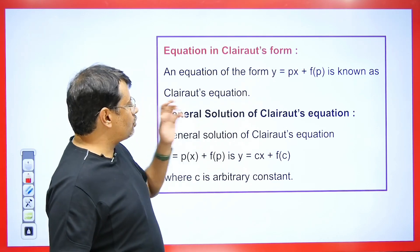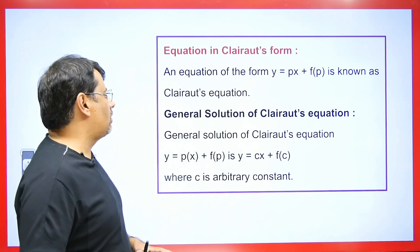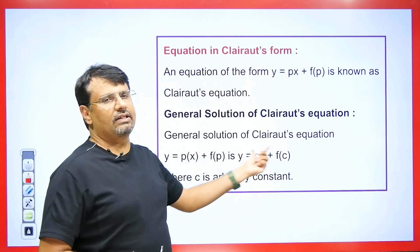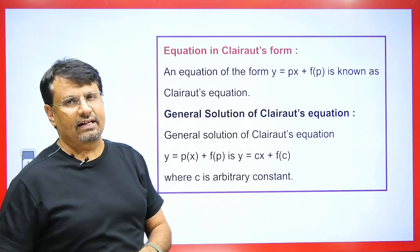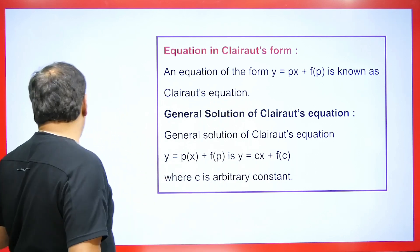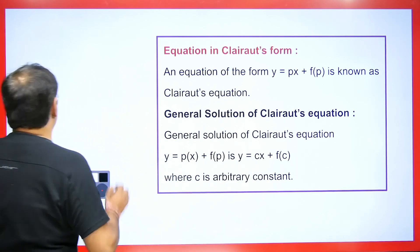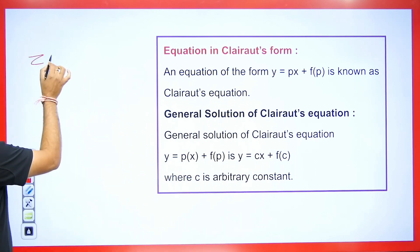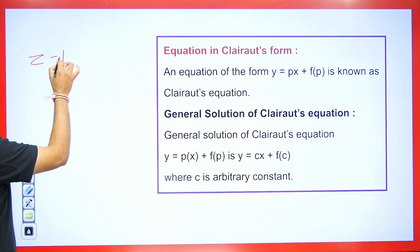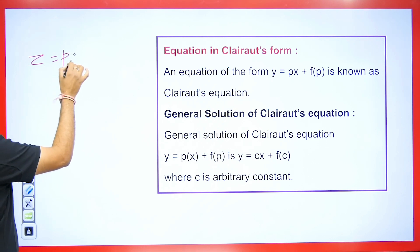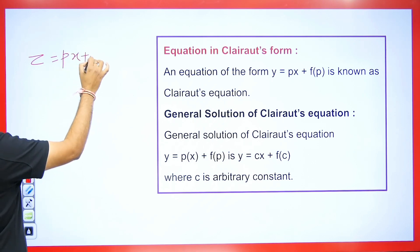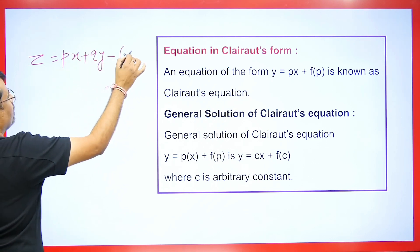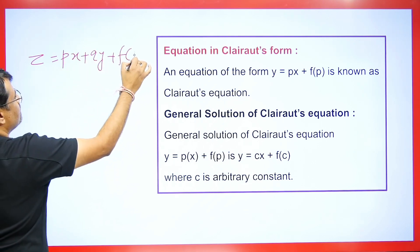How do we get the solution of this type of equation? Wherever p appears in the equation, we will put c there. In partial differential equations, the form is z = px + qy + f(p, q), and its solution is z = ax + by. Students get confused between the two forms, but both have almost the same concept.